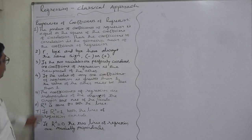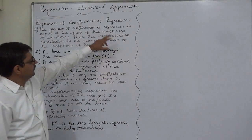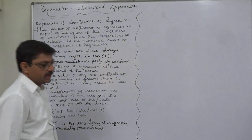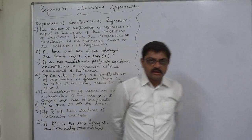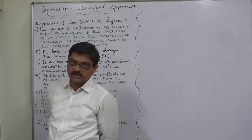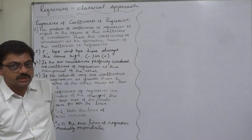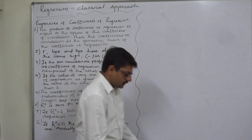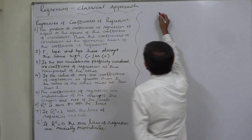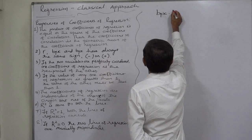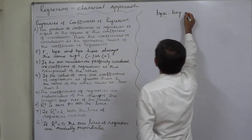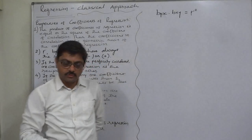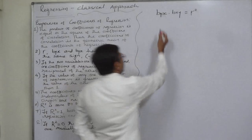The very first property is: the product of coefficients of regression is equal to the square value of the coefficient of correlation. The interpretation of this property is thus: the coefficient of correlation is the geometric mean of the two coefficients of regression. Let us check it — the product of the two coefficients of regression equals the squared value of the coefficient of correlation.